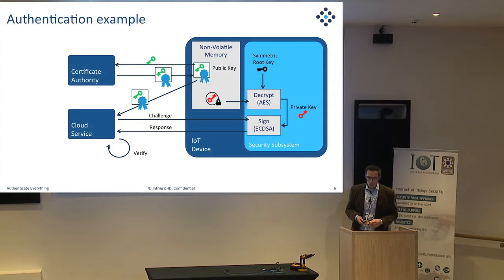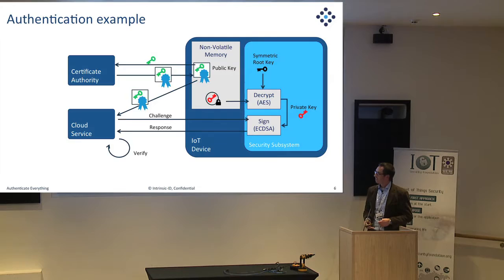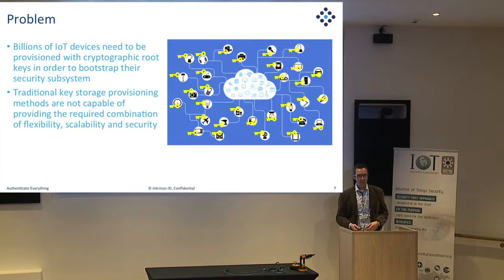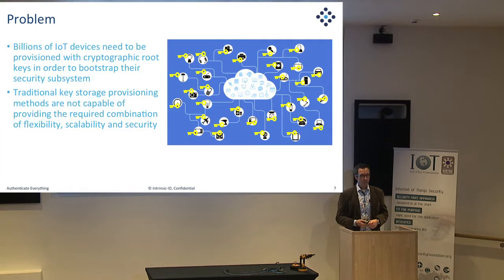We need root keys as a starting point and foundation for our security subsystem. But what I haven't addressed yet is: how do we get these root keys into devices, and how do we store them? This is a big problem. In the IoT, we have billions of devices that need to be secured and need root keys inserted somehow. Traditional mechanisms of storing keys do not offer the required flexibility combined with security for such an enormous task.